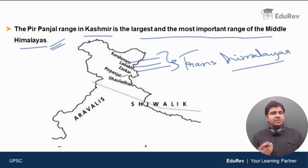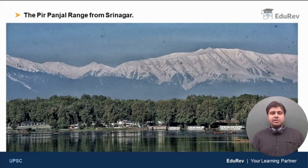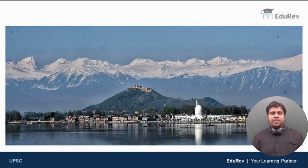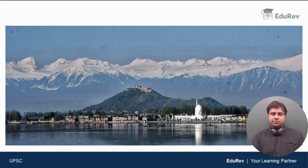The Pir Panjal range in Kashmir is the largest and the most important range of the middle Himalayas — please keep this in mind. This is how the Pir Panjal range looks from Srinagar — very beautiful and majestic. When air pollution is less and the weather is good, this is how it appears from Srinagar.